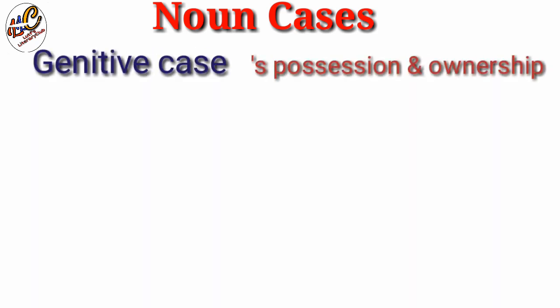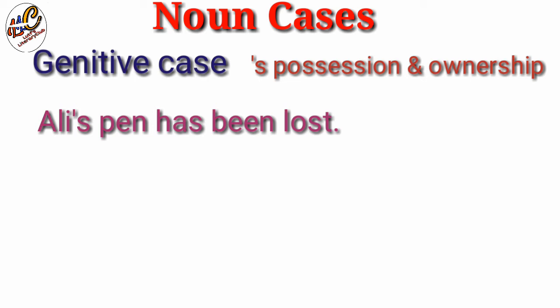Therefore, table is the object of preposition 'on' and is the accusative case of noun. When a noun denotes possession or ownership, we call it possessive case. For possessive case we use apostrophe and 's' with the noun. For example, 'Ali's pen has been lost.' In this sentence, Ali and pen are both nouns, and Ali is showing the ownership of pen — that the pen belongs to Ali. Therefore Ali is the possessive case in this sentence.